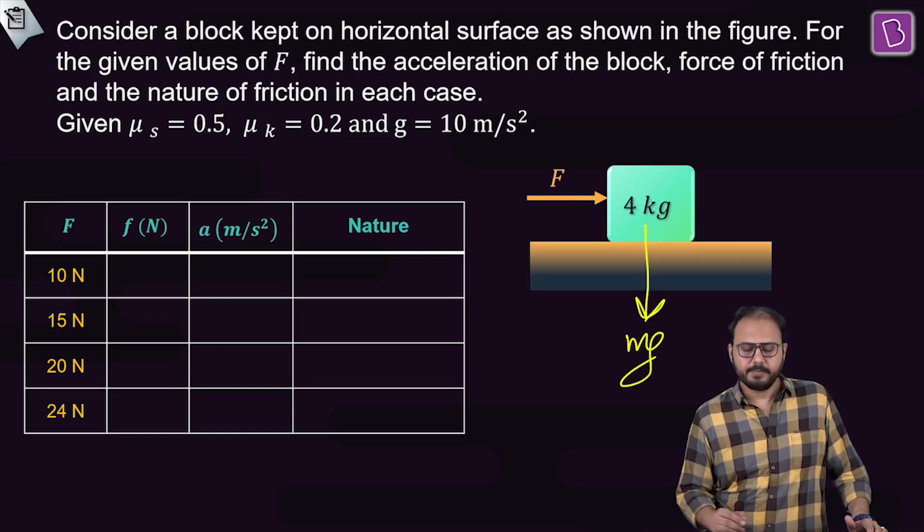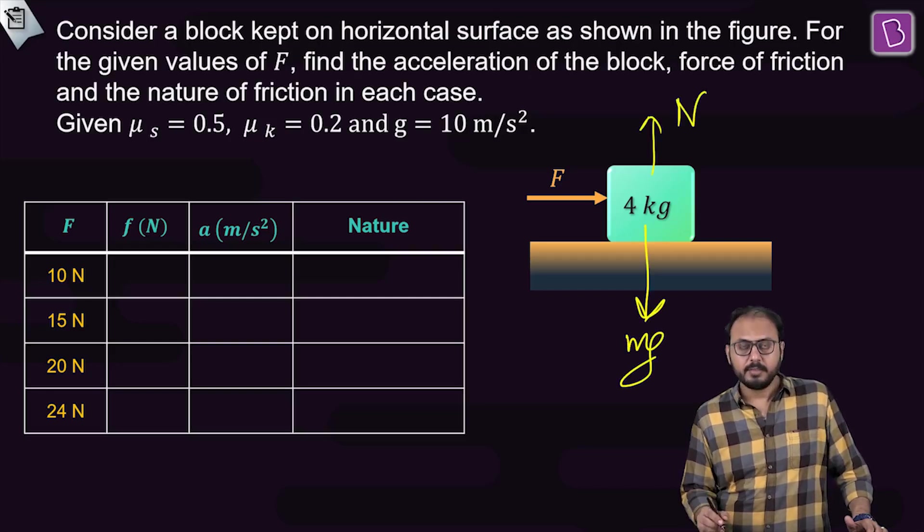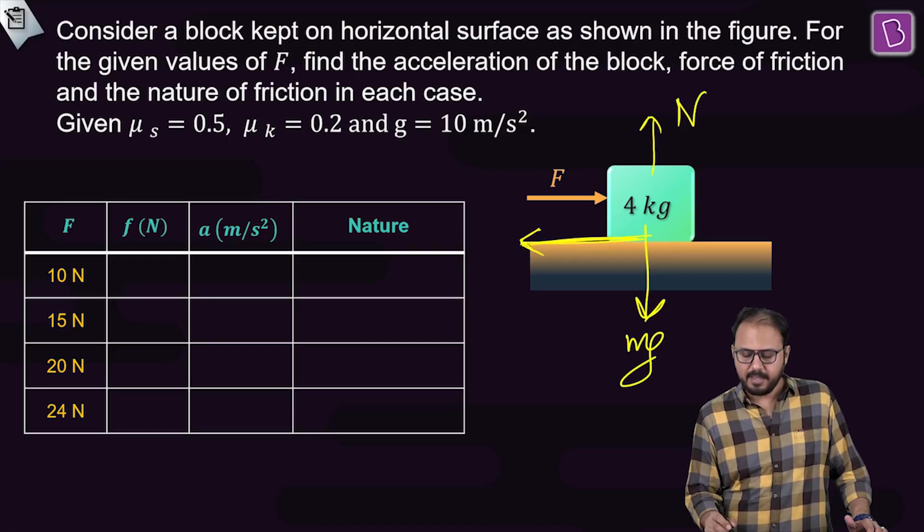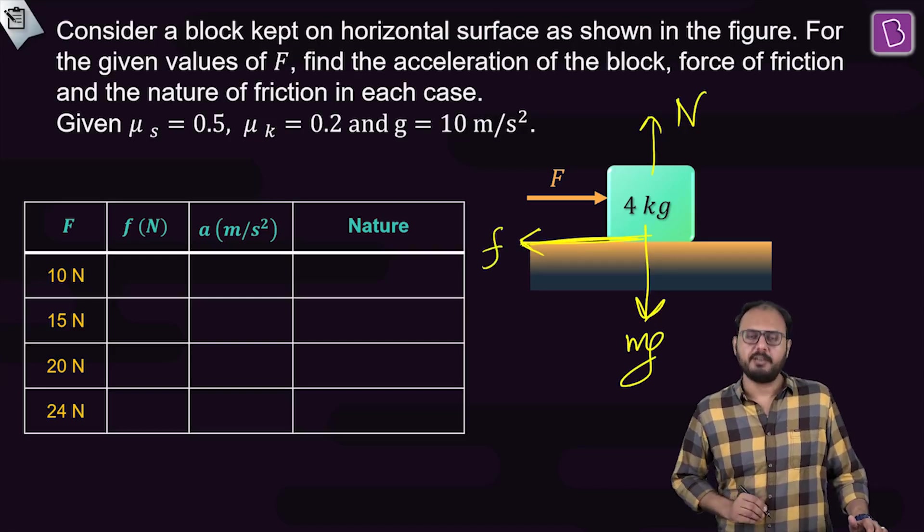One will be mg, one will be normal, and there will be friction behind. Why? Because you are pushing it to the right, so the friction will act to the left.